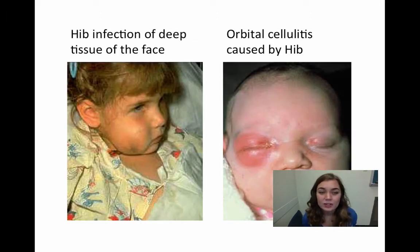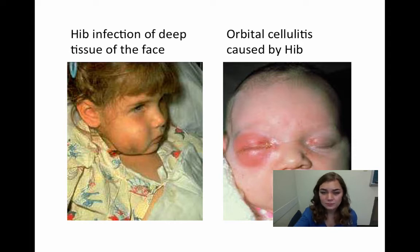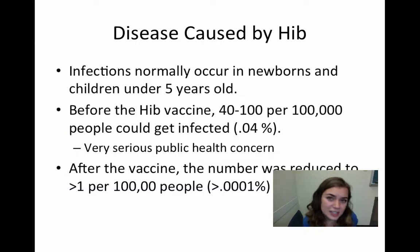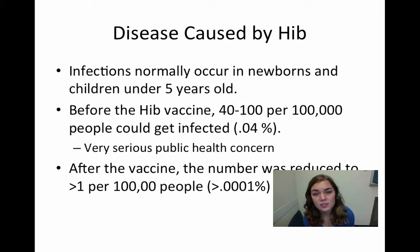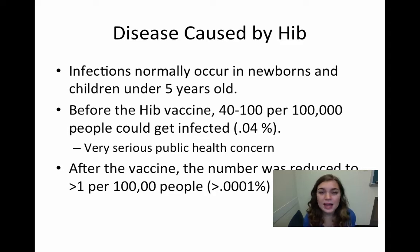On the left, we have a picture of a girl who has a Hib infection of the deep tissue on the face. And on the right, we have a picture of a newborn with an infection of the lacrimal apparatus causing orbital cellulitis. As you can see in the previous slide, these infections usually occur in children under 5 years old and also in newborns. And before the Hib vaccine was made, 40 to 100,000 people got infected — that's 0.04% of the population. Combined with the fact that Hib infects at such a young age, this was cause enough for very serious public health concern.